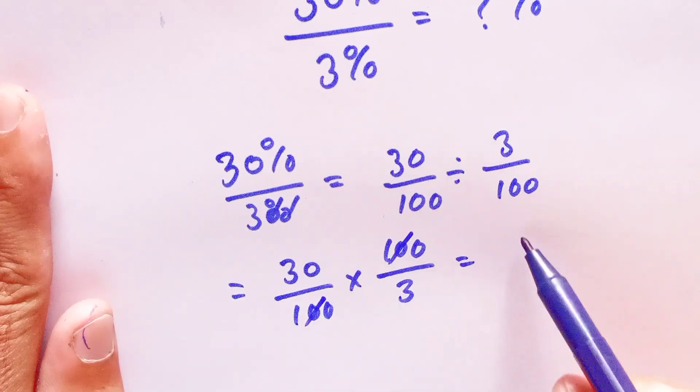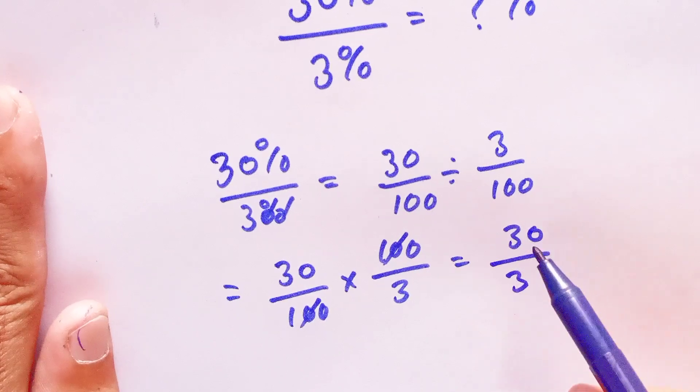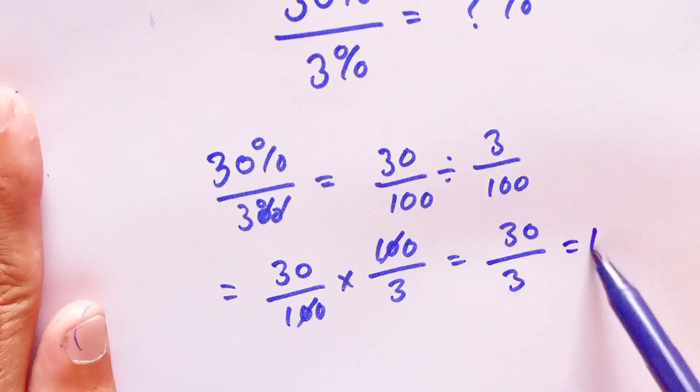We can cancel out the 100 with 100, which is equal to 30 divided by 3. When we divide 30 by 3, we get 10.